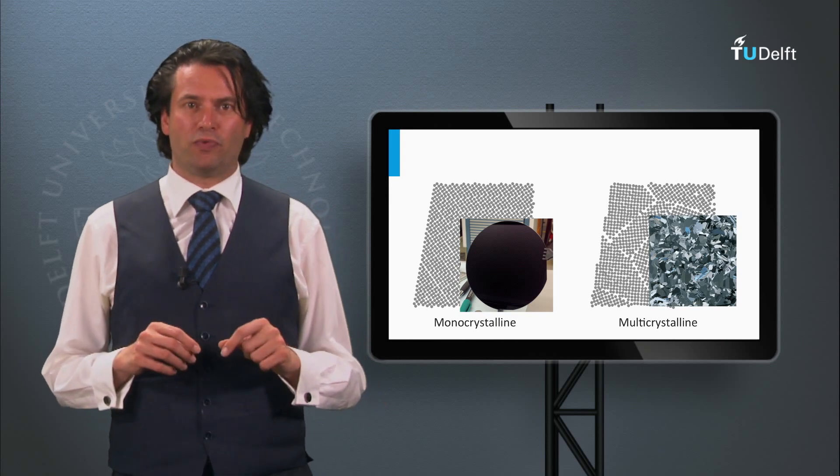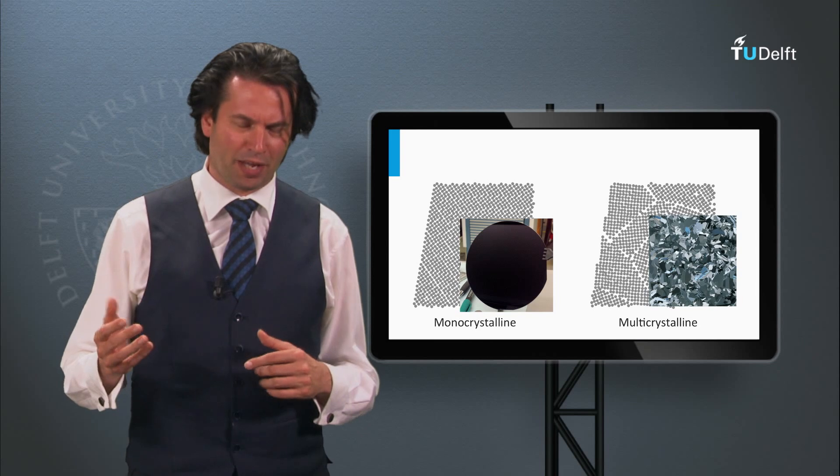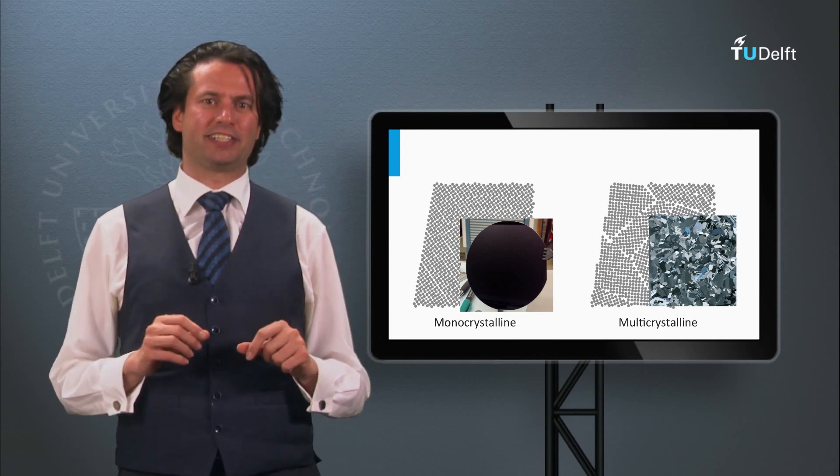We have various types of silicon wafers, such as monocrystalline silicon and polycrystalline silicon. In this block I will give an answer to the question: how do we make these various types of silicon?